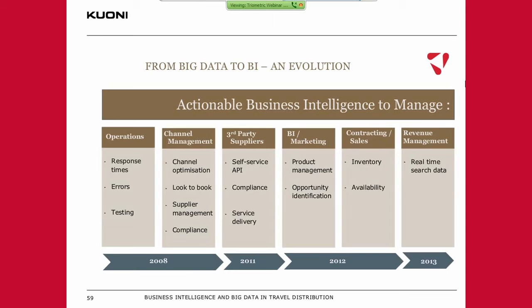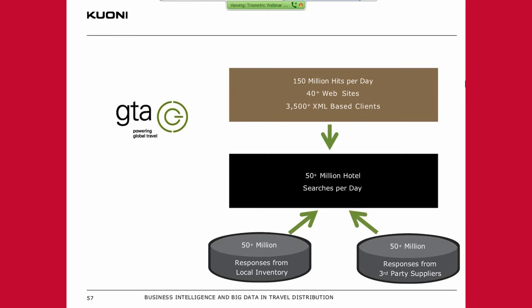Through their XML module, Triometric worked on analyzing the number of hits we were getting. We were getting about 75 to 100 million hits per day from our XML client base. Those requests would come through to us, and about 50 million of those were hotel searches. We would onward send some of those requests to our supply chain — external third-party suppliers who would retrieve inventory, perhaps talking directly to hotel chains. About 50 million we would also respond from our local inventory, correlate the lot together, and send it back to our client.